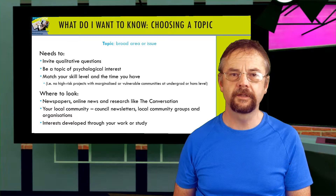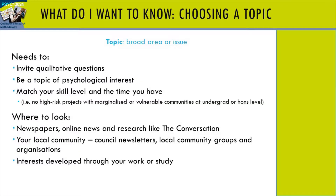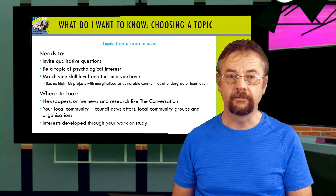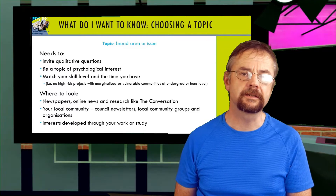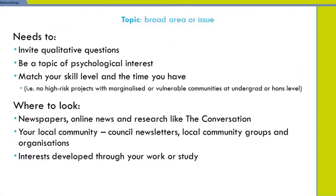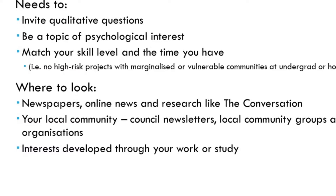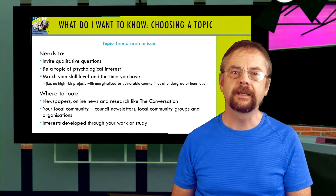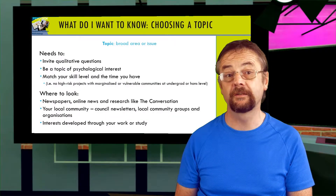When you choose a topic, you want to first make sure it's current and relevant. Good places to look are newspapers, watching the news on TV, reading online publications like The Conversation. You can also get to know the issues that are current and relevant for your surrounding community — council newsletters, local community groups, and organizations. You can also focus on interests you've developed as part of your work or study, though these may not be current or relevant to people outside of your work or study group.